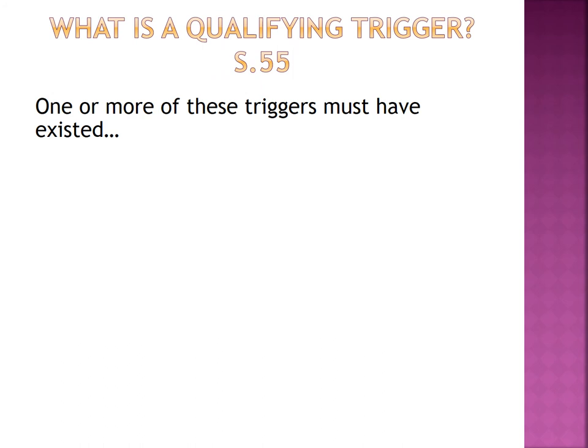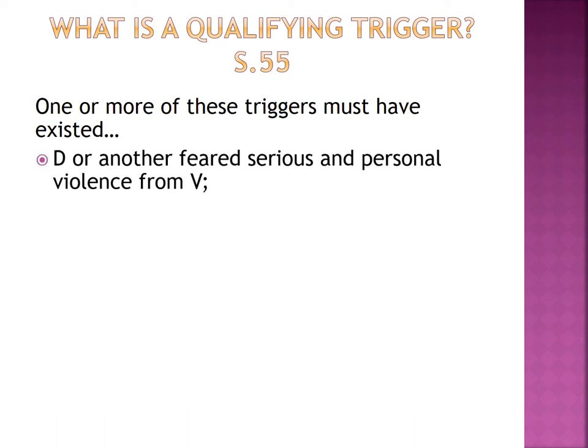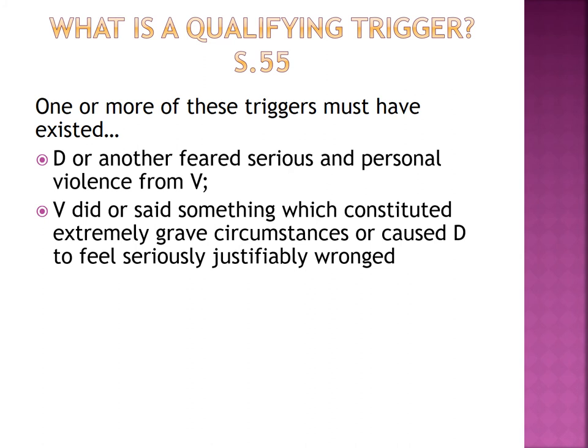Going through each element: the loss of control must be as a result of a qualifying trigger under section 55, subsections 3 and 4. Firstly, under subsection 3, you can kill if you fear serious and personal violence from the victim against you or another — so if you're a parent, you might fear serious violence not just against yourself but against your children.